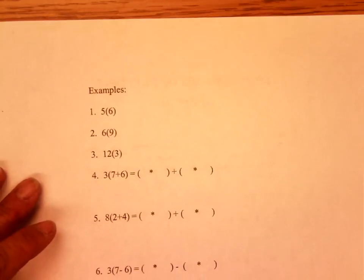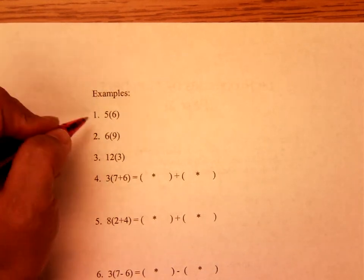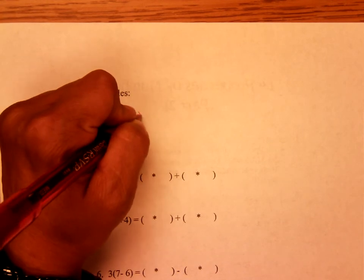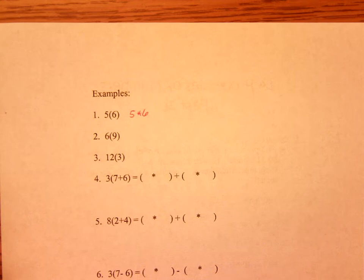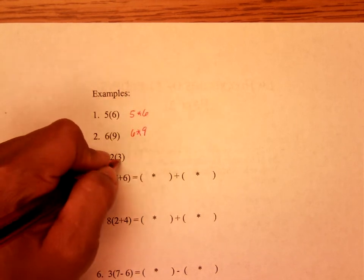Alright, so looking at example. Now example 1, how would you write this? You should have known this is 5 times 6. So go ahead and do 2 and 3. When you're ready, go ahead and push play. So you should have written this as 6 times 9, and 12 times 3.